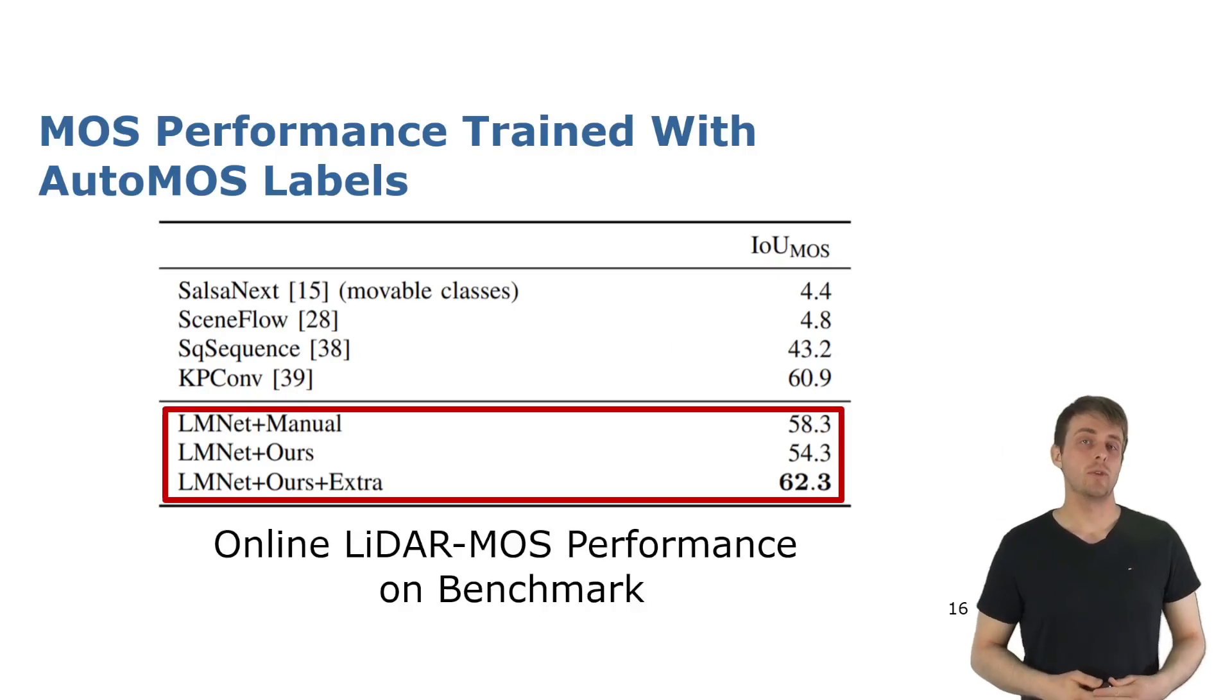Here we show some quantitative results of LMNET on the Semantic KITTI moving object segmentation benchmark with different training setups. In the first row you see the setup of training LMNET with the manual annotations provided by the benchmark. The second row shows the setup with the same amount of training data but using our automatically generated labels. You can see that this still achieves a reasonable moving object segmentation performance.